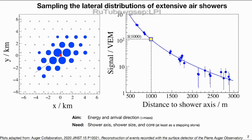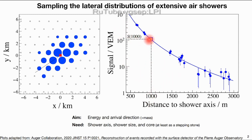Just a quick review of how we measure extensive air showers. The shower footprint arrives at ground on a surface detector array, these particles deposit signal, and what we typically do is plot the amount of signal — essentially the number of particles — deposited in each surface detector station as a function of the station's distance from the shower axis. We then take the predicted signal at a specific distance, which for an Auger-like detector is 1000 meters, and use that as our estimator for the energy.